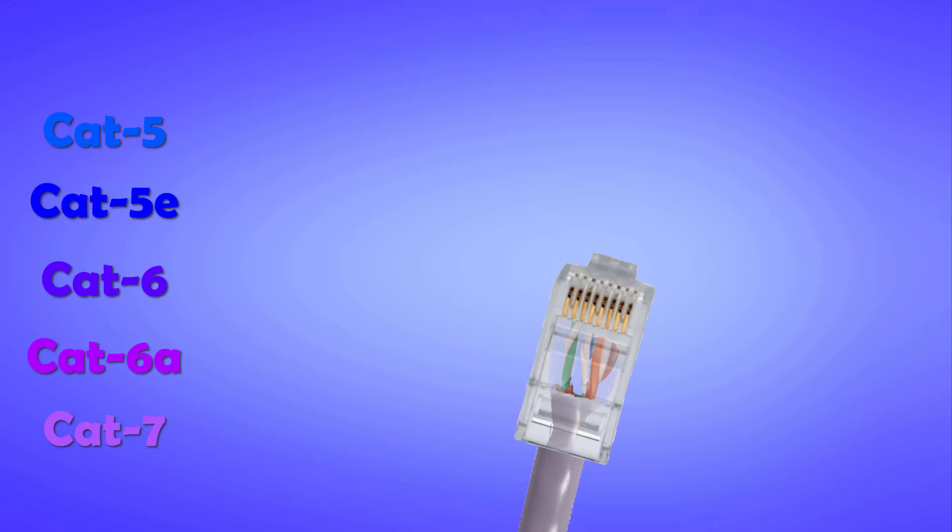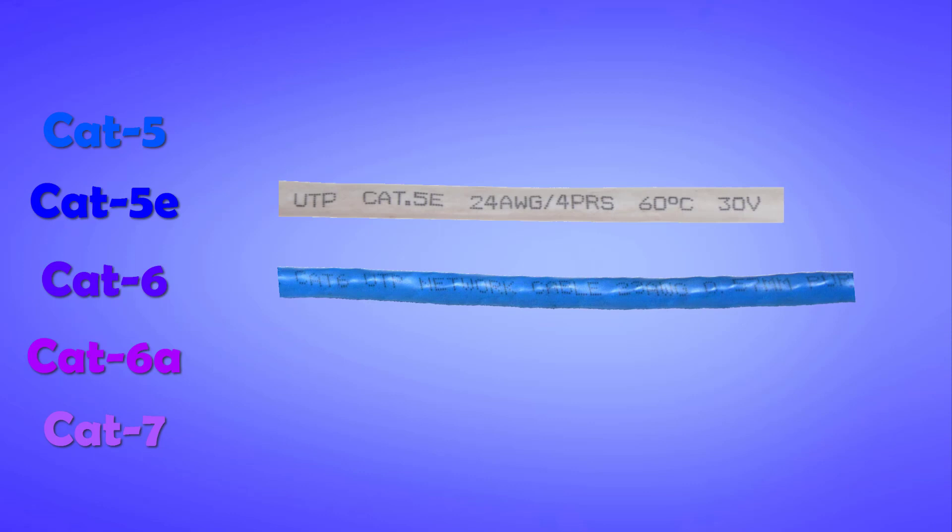You don't have to worry much about this as specifications are printed on every cable. This information includes the cable's category, structure or composition, gauge of conductors, operating temperature, and maximum voltages that can be applied to that cable.